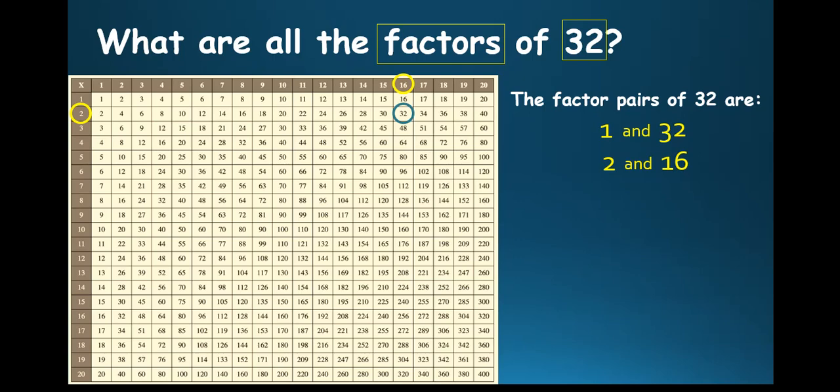2 times 16 is 32. We go to the next number, 3. That's row 3. You will notice that if you do skip counting by 3, the closest you will ever get to is 30 or 33. So you won't see 32. So you move on to the next one, which is 4. Skip counting by 4, you will definitely see 32. And that is at the 8th column. So we can say 4 and 8 are also factor pairs of 32.